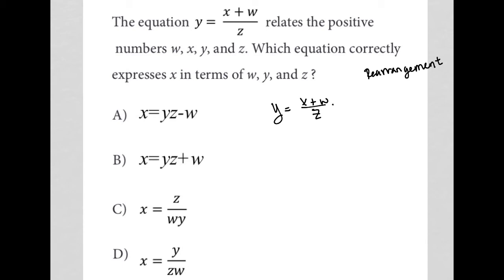To do that, first and foremost, I'm going to multiply both sides by z. This allows me to cancel out the z's here. So I'm left with yz equals x plus w.